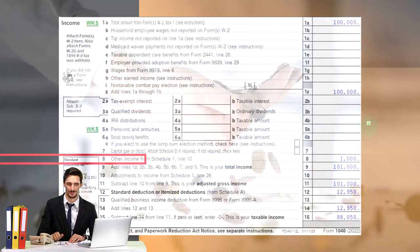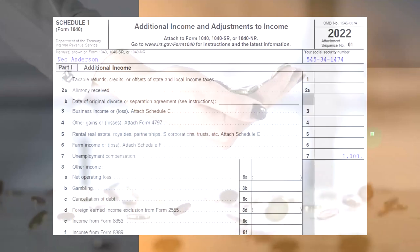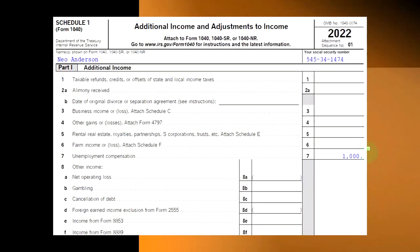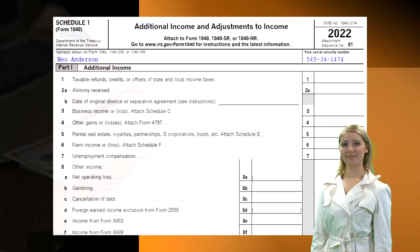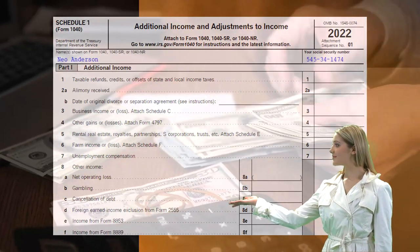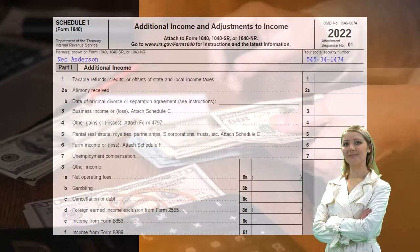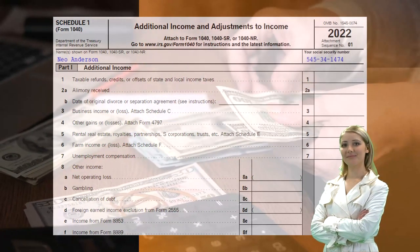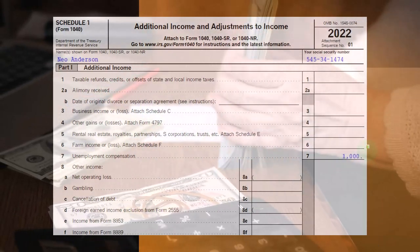Where would it be reported? We have line 8, other income from Schedule 1, and on Schedule 1 we have the unemployment compensation line. You are generally going to receive a form for unemployment compensation, just like you would for any other potential income — if it was the state that paid you the unemployment, that form would be a 1099G.